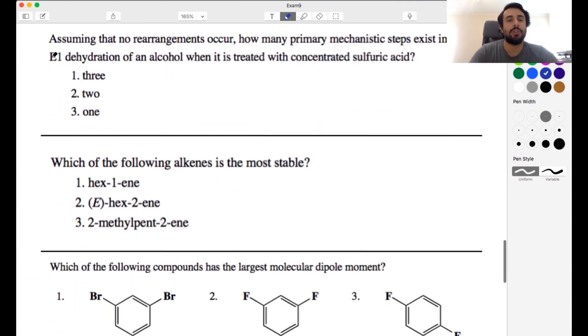Okay, so multiple choice. Assuming that no rearrangements occur, how many primary mechanistic steps exist in the E1 dehydration of an alcohol when it is treated with concentrated sulfuric acid? So if we're doing E1D, this is an E1 dehydration. Step one is protonation. We're going to protonate that hydroxyl group. We've got acid in there. Sulfuric acid is going to protonate the hydroxyl group.